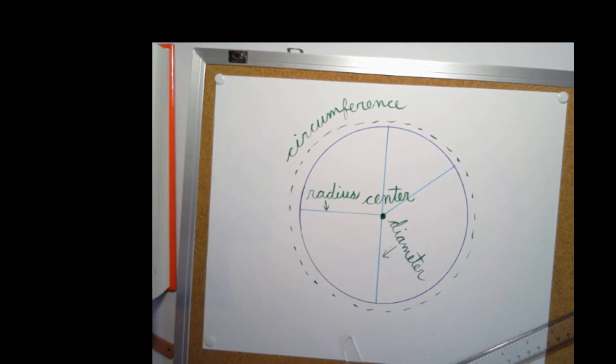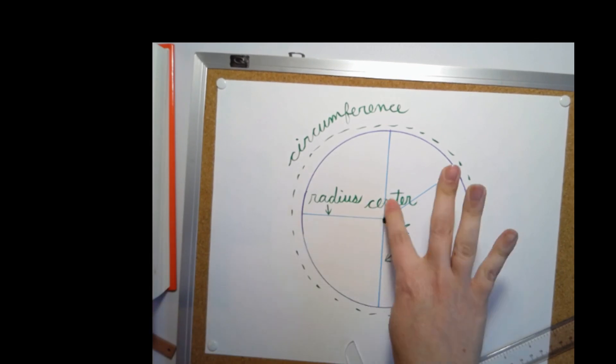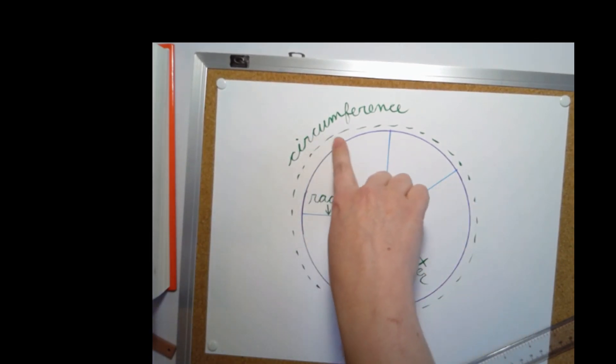Please make sure to label them. In the follow-up work, I have included labels for you to cut out and glue if you do not feel comfortable writing them. And so it says center, radius, diameter, and circumference.